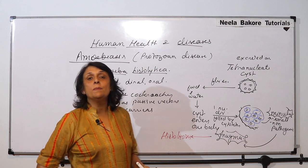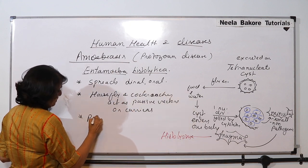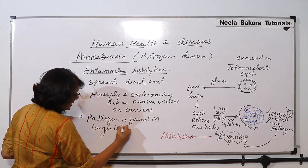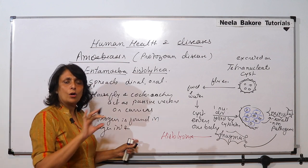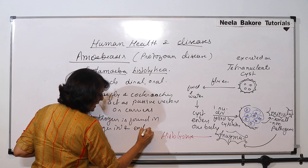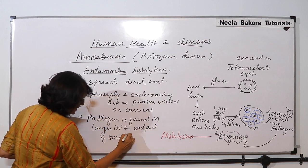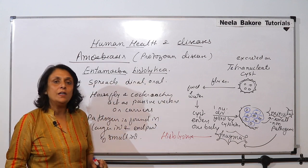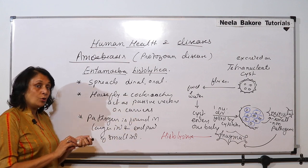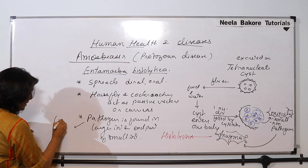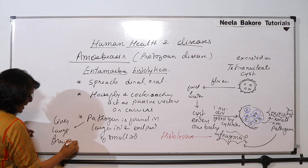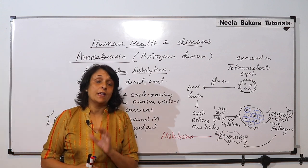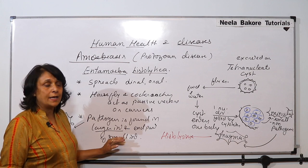This pathogen, Entamoeba histolytica, is found in the large intestine and in the end part of the small intestine — most probably in the ileum region. The pathogen can also be found in the liver, lungs, and brain. The most common place other than the intestine is the liver, though most of the time we detect them in the large intestine and small intestine.